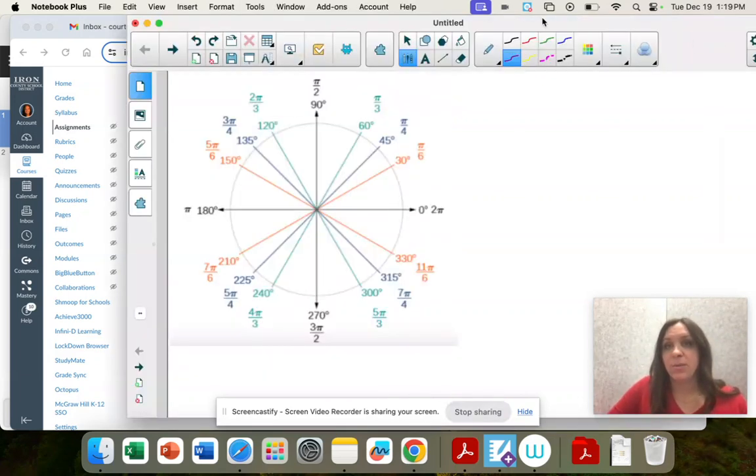So I'm going to go to my unit circle, and I'm going to find three pi over four, which is over here at 135 degrees. It's right in the center.